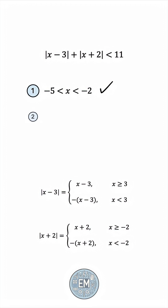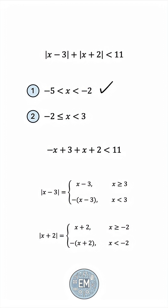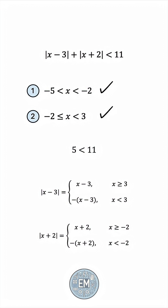The second case is when x is greater than negative 2 but less than positive 3, in which case the first quantity would be negative, but the second one would be positive. Simplifying, we get 3 plus 2, or 5 is less than 11, which is always true. So we take the second possibility in its entirety.